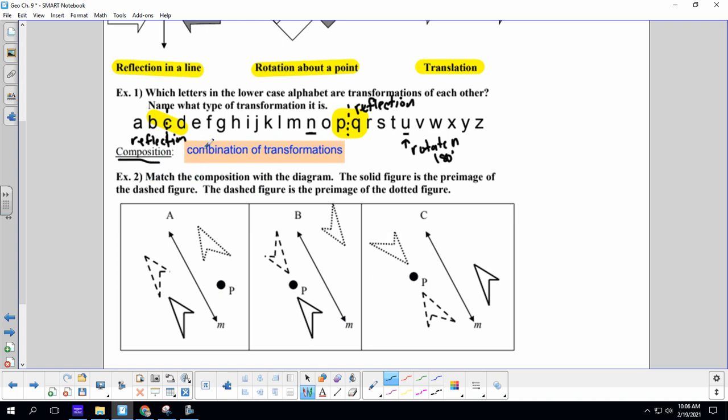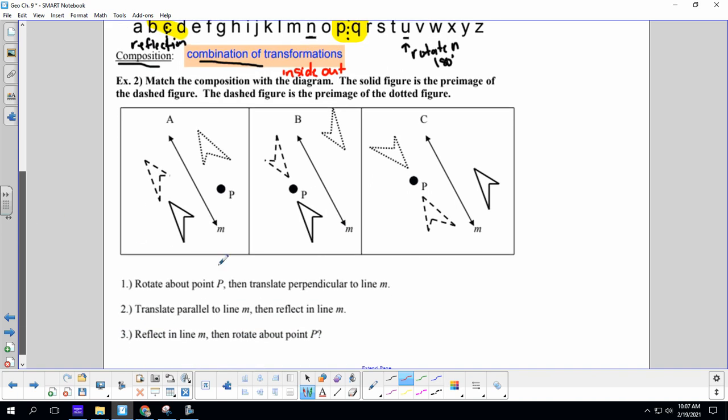All right, so example two, composition is a combination of transformations. And the way we write compositions, it is like we go from the inside out. When we come down here and talk about these, you'll see what I mean by inside out.